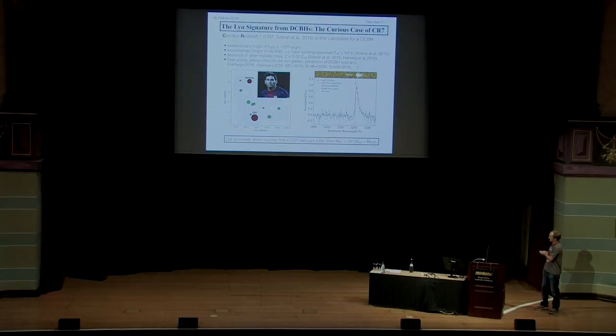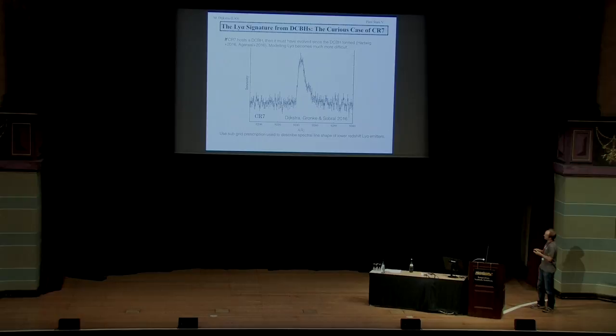Now the interesting thing about CR7 is that its luminosity by itself requires the black hole to be more massive than what you expect for direct collapse black holes, right? It should be in excess of about 10 to the 7 solar masses. And this is actually, the interesting thing is that the requirement on the mass is consistent with theoretical modeling that has been done by people in the audience here, Tilman Hartwig and Bhaskar Agarwal. So the idea is that if you want to explain CR7, you basically formed the black hole at much higher redshift. Then the galaxy as a whole evolved from high redshift down to redshift seven.